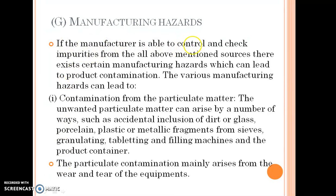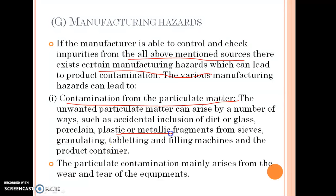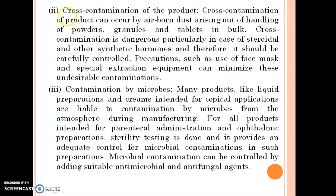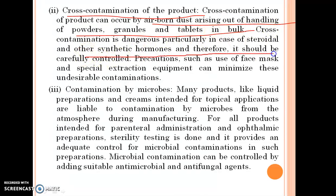Manufacturing hazards: if the manufacturer is able to control and check impurities from all the above-mentioned sources, there exist certain manufacturing hazards which can lead to product contamination. The unwanted particulate matter can arise by accidental inclusion of dirt, glass, porcelain, plastic or metallic fragments from sieves, granulating, tabulating and filling machines and the product container. Particulate contamination mainly arises from the wear and tear of the equipment. Cross contamination of the product also occurs by airborne dust arising out of handling of powders, granules and tablets in bulk. Cross contamination is particularly dangerous in the case of steroidal and other synthetic hormones and therefore should be carefully controlled.